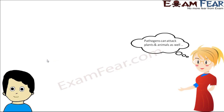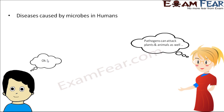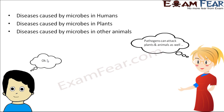Pathogens can attack plants and animals as well — it is not only human beings who are victims. Disease-causing microorganisms also attack plants and other animals. We will talk about diseases in humans, plants, and other animals in separate sections.